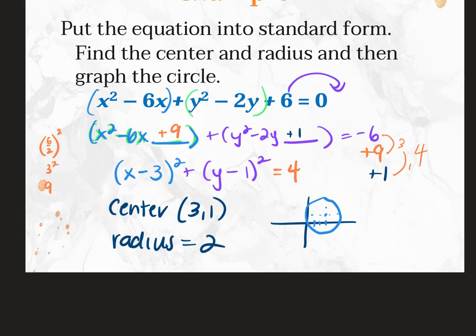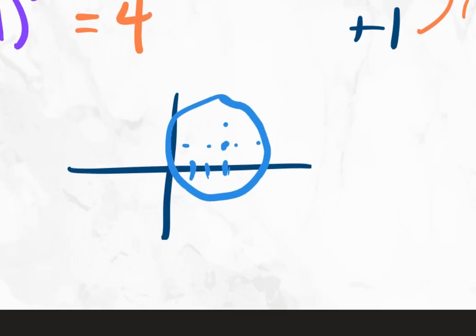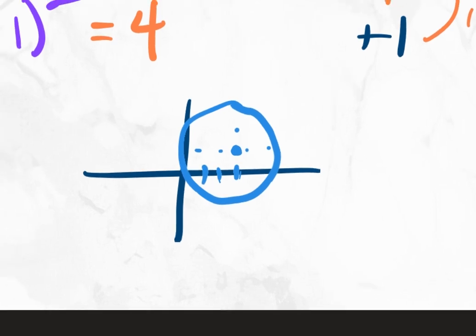For each of these conics, you want to know how to do them both ways: given the graph or information to find the equation, or given the equation to find the information. Go to the center first, then whatever the radius is, go north, south, east, west — up the radius, right the radius, down the radius, left the radius — and then connect them as best you can.